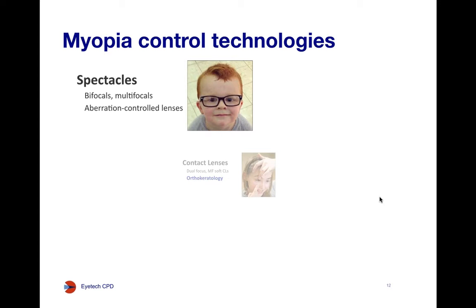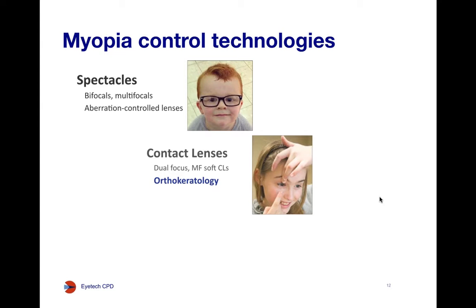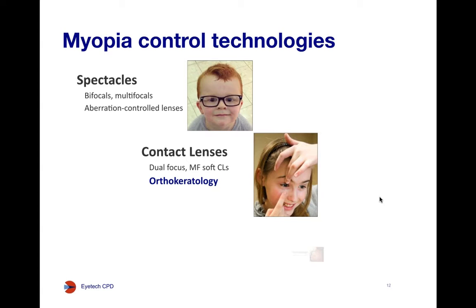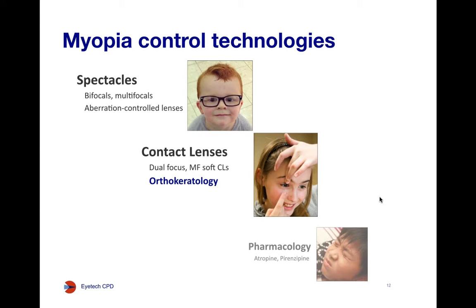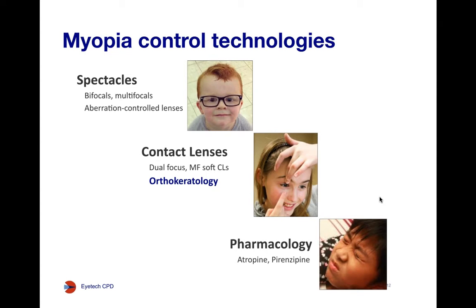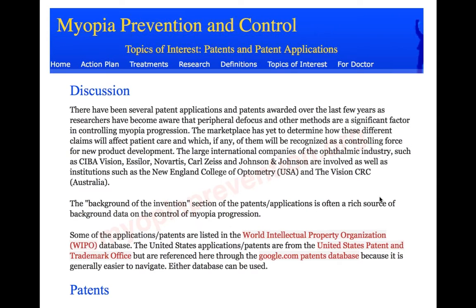When we look at available myopia control technologies, we have optical technologies such as bifocals, multifocals, and spectacle-based technologies; emerging contact lens technologies such as dual focus soft lenses and multifocal soft lenses; as well as orthokeratology, which is developing a name as the number one optical choice of therapy. Pharmacological interventions are being developed, but we have a long way to go before we can be safely assured they are safe long term. The website myopiaprevention.org lists a large number of patents, and you'll find that most optical inventions share the property of introducing simultaneous peripheral plus power to the eye alongside foveal correction.